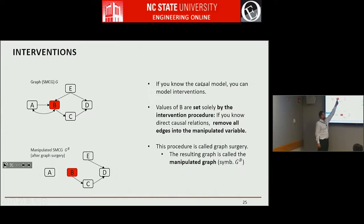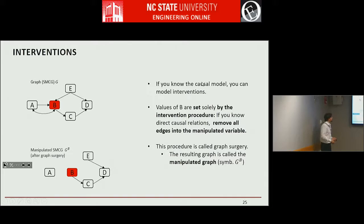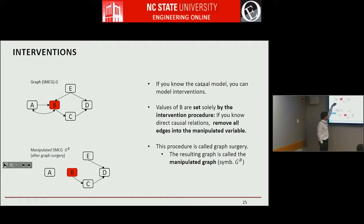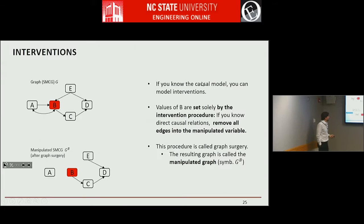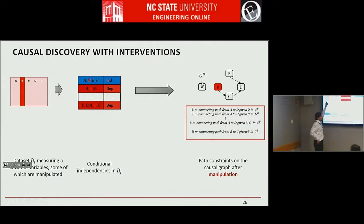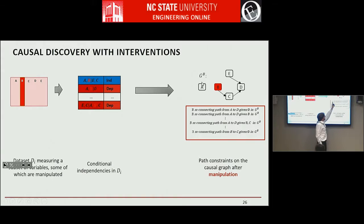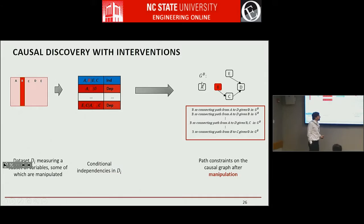How do we model this with our causal graphs? If you know the causal graph — say this is food intake, which is determined and caused by many factors from your genes to your socioeconomic status — once you do the randomization, it's the experimenter who determines the value of what you're eating. So nothing else now determines the value of what you're eating. We drop the edges that are incoming to B from the graph, and that's how you model what's called hard interventions. We denote the graph with G superscript B.